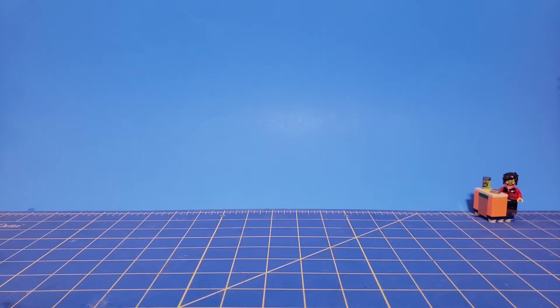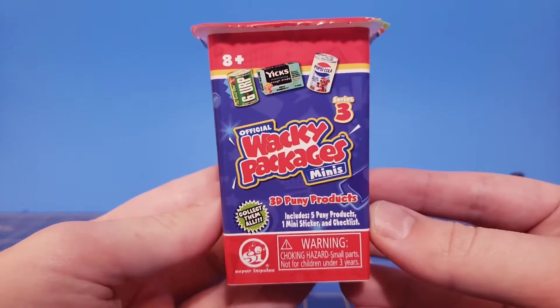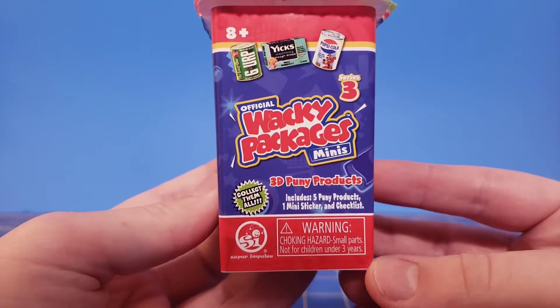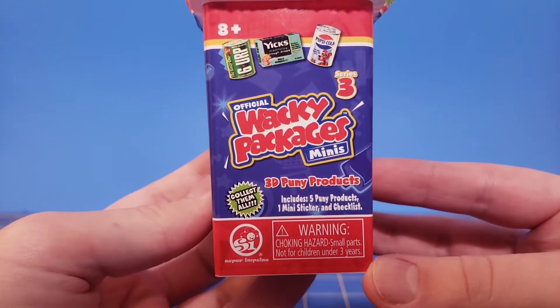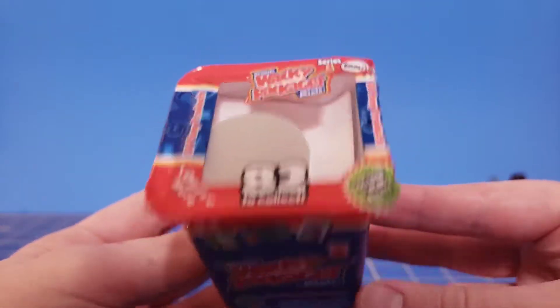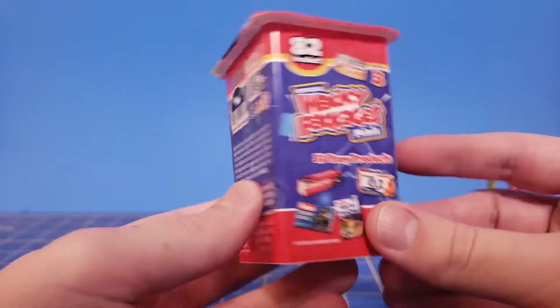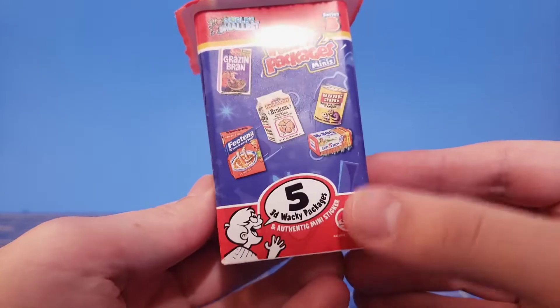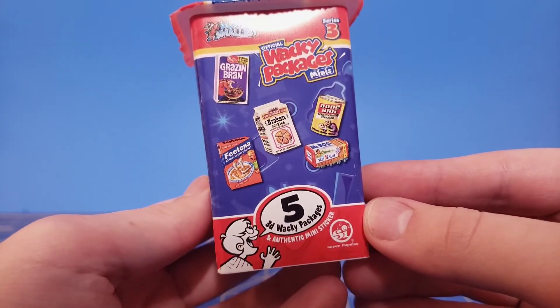This time I got something that's going to be useful for my action figure display, but I have here an official Wacky Packages Minis 3D Puny Products, and you can see that there's one at the top there. Apparently this comes with five, yep five, and a sticker sheet.